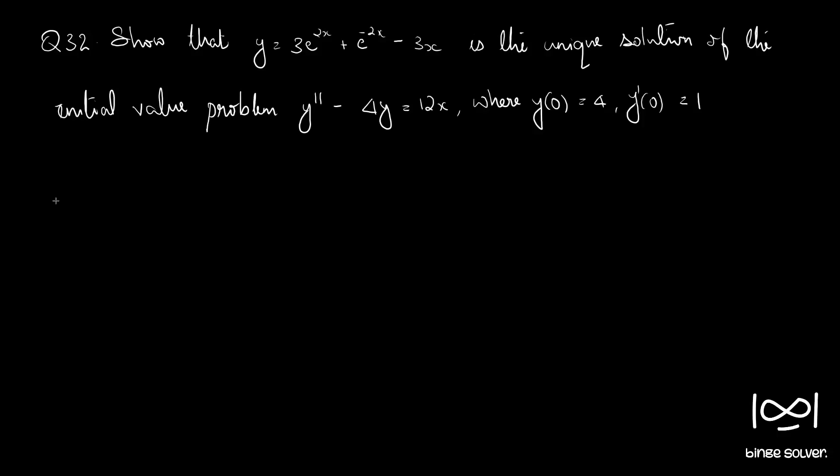Question 32: Show that y = 3e^(2x) + e^(-2x) - 3x is the unique solution of the initial value problem y'' - 4y = 12x, where y(0) = 4 and y'(0) = 1.